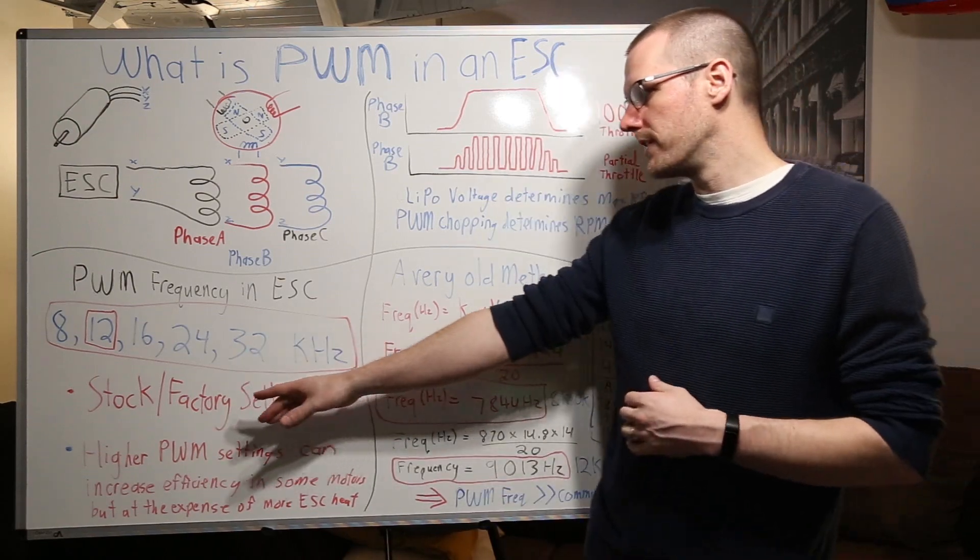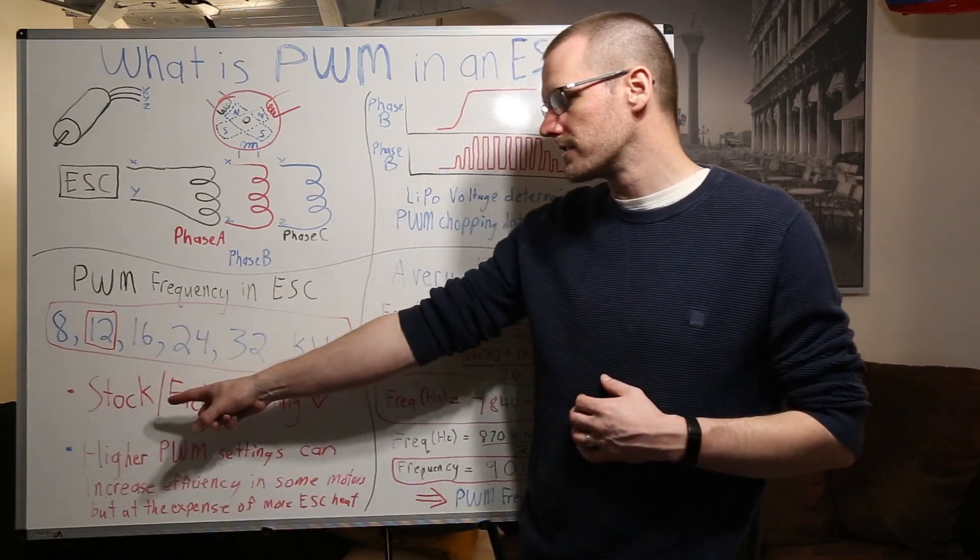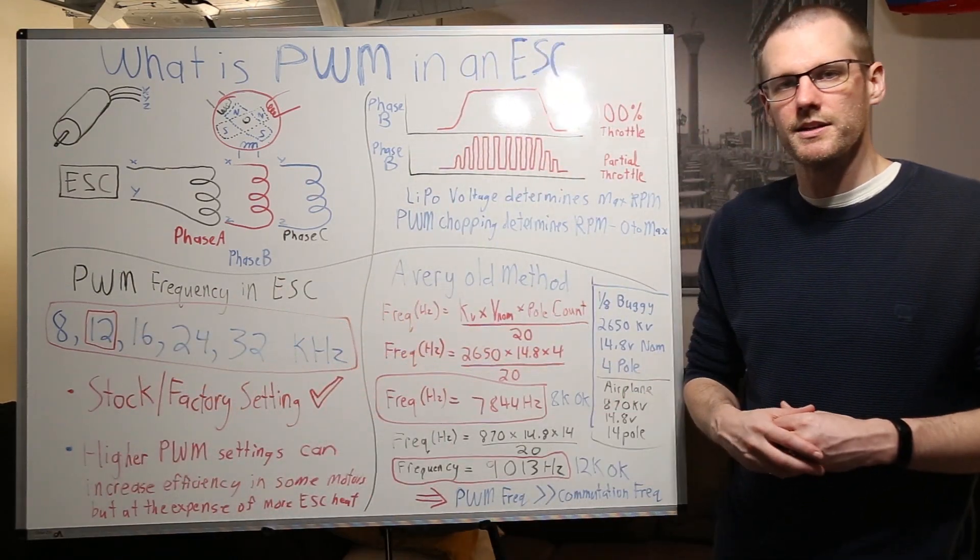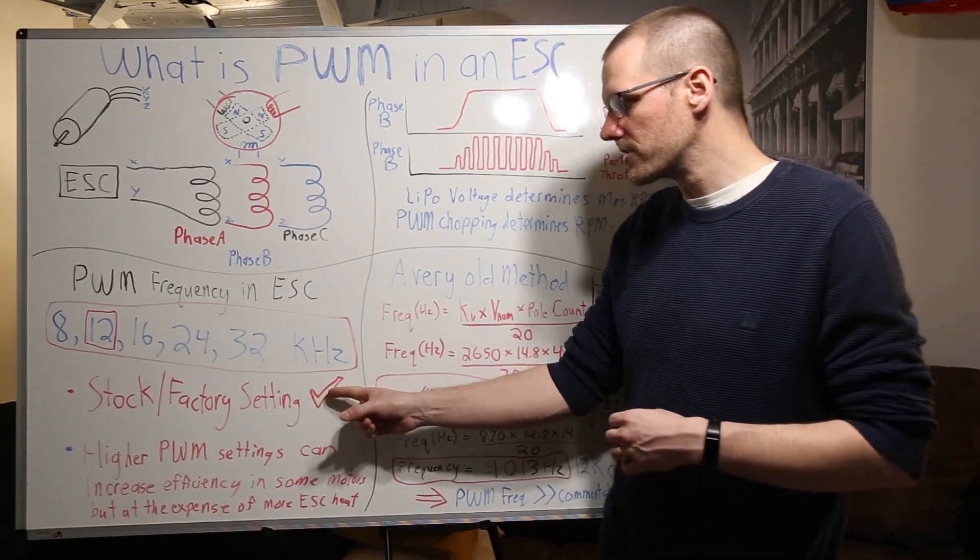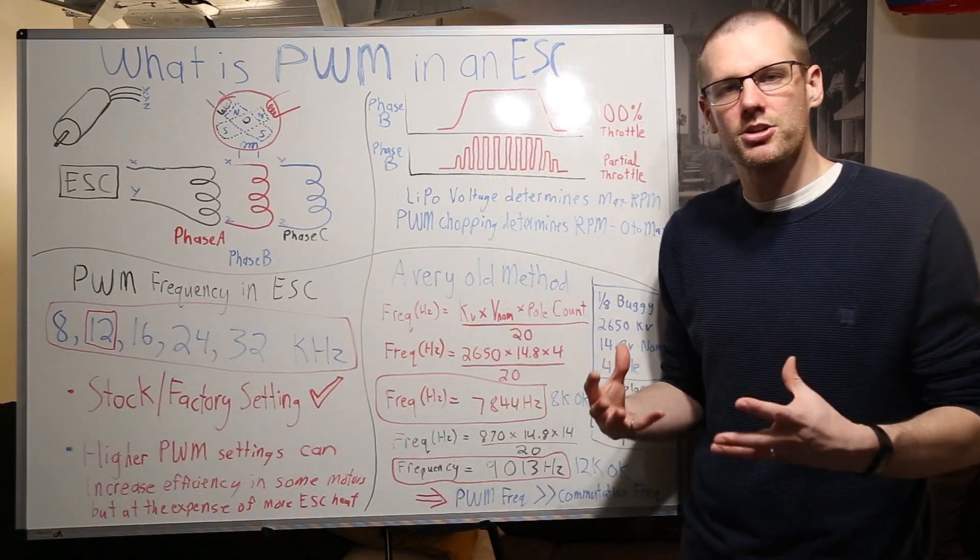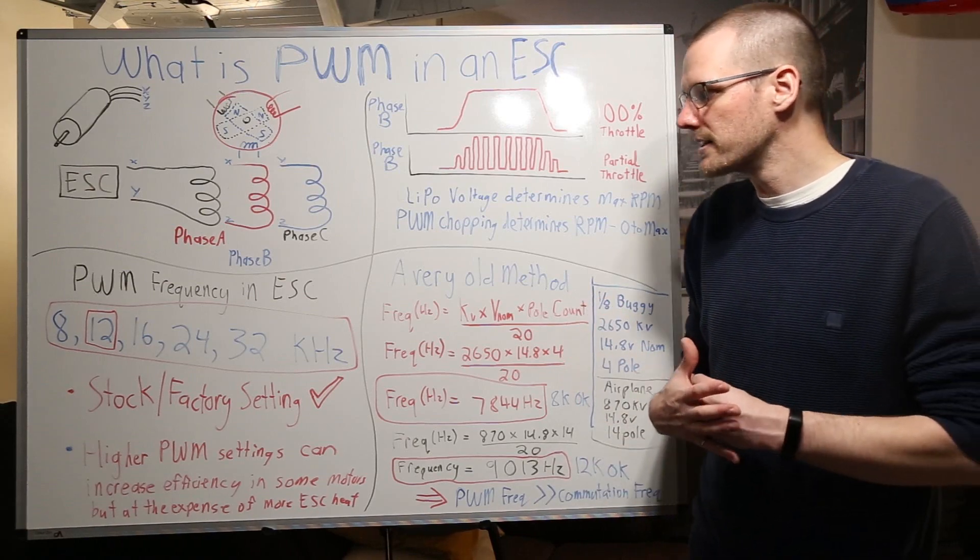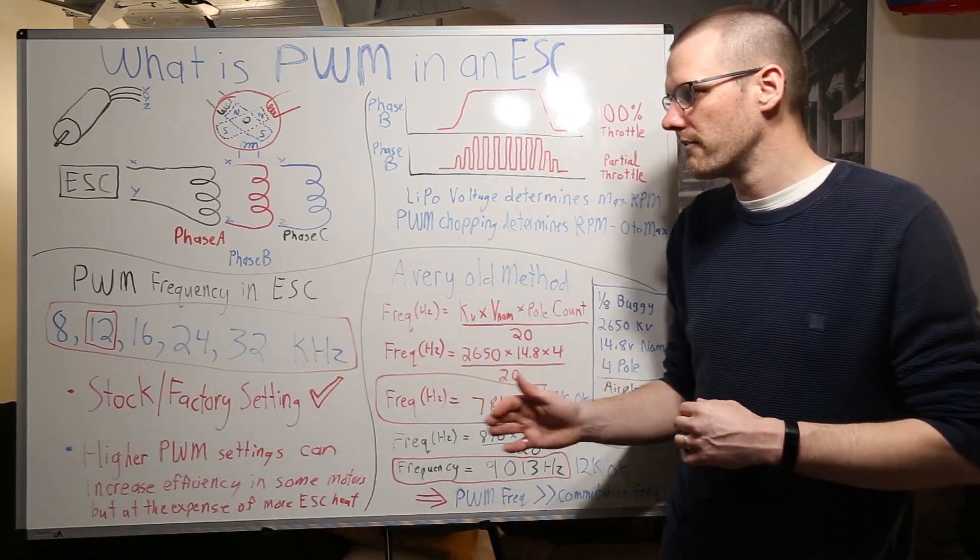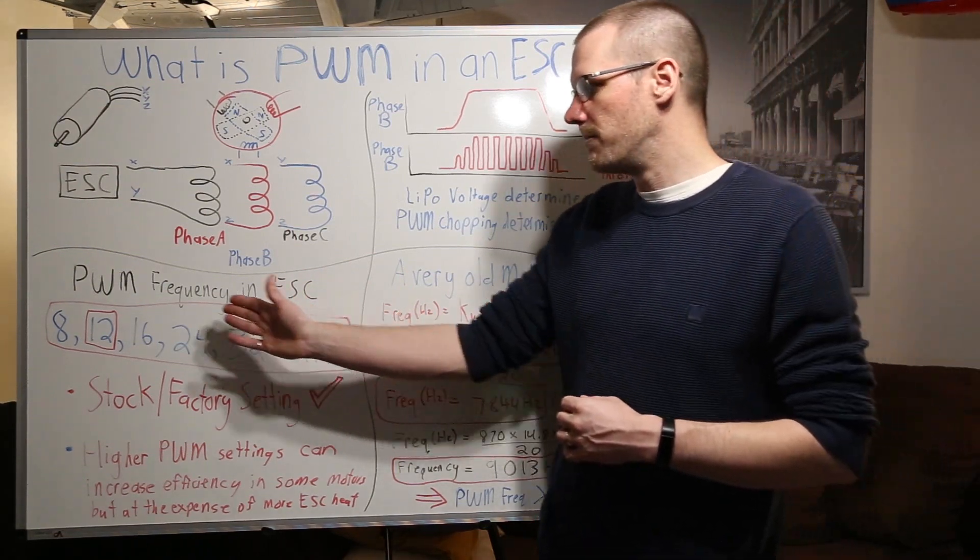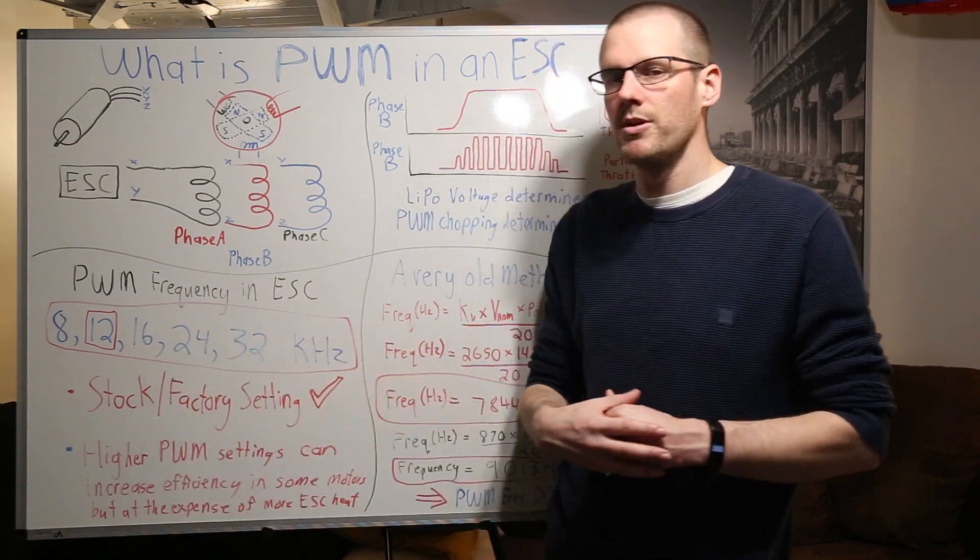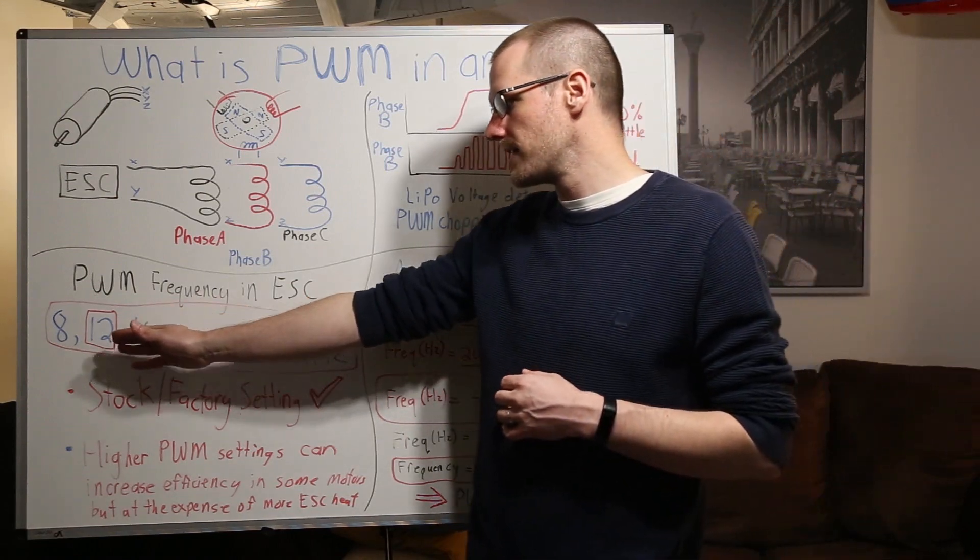Now the first point that we have here on this part of the whiteboard is this value. The reason why it's boxed off is because it is the stock and factory settings on many ESCs out there. Now what's important is I have this awkward check mark right here is because that value actually doesn't need to be changed for most setups that exist out there. In fact I would say for the last 10 years I probably have not ever gone into my PWM settings within the speed control and adjusted it based on function and performance of a brushless motor and we'll show you exactly why in this last part here why I haven't changed that setting.